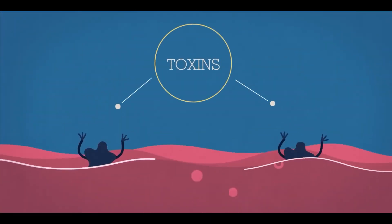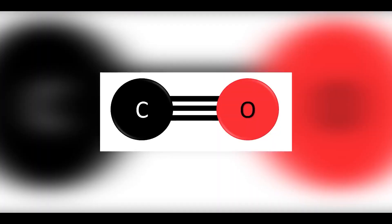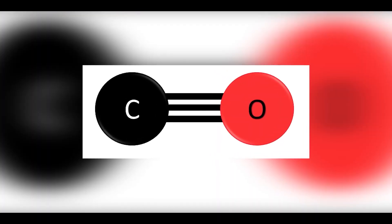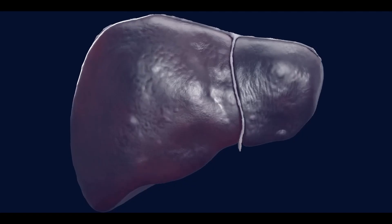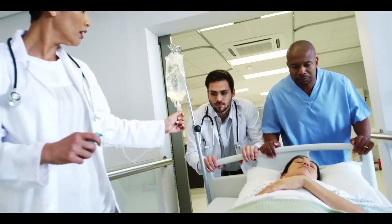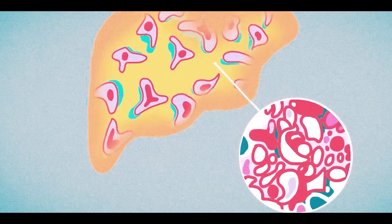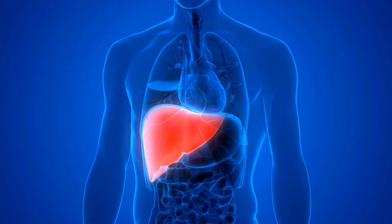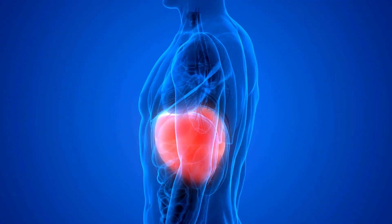Liver: The liver, responsible for filtering waste materials, breaks down alcohol into carbon monoxide, which damages liver cells. This depletion of oxygen in the liver can lead to hypoxic hepatitis, a life-threatening condition. Additionally, alcohol causes fat buildup in the liver, leading to fatty liver diseases, bleeding, swelling, and inflammation.